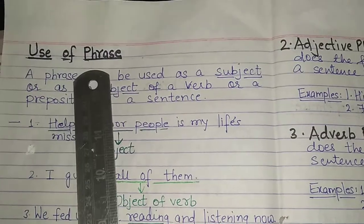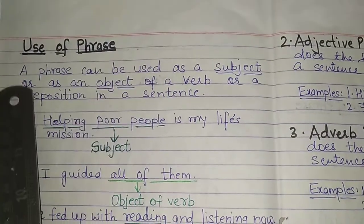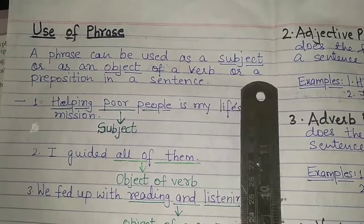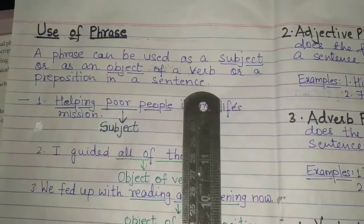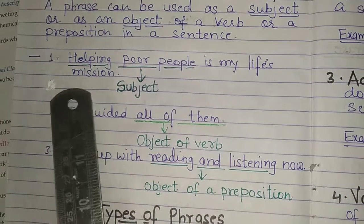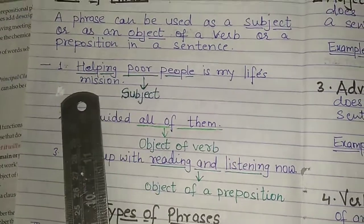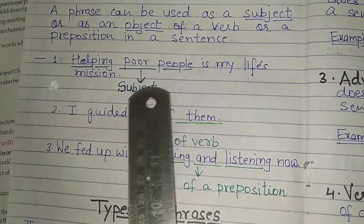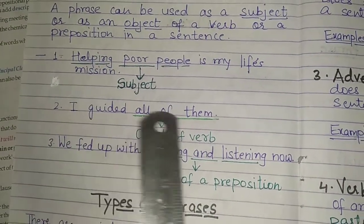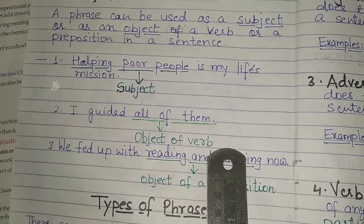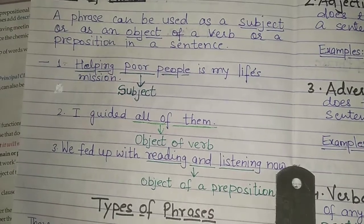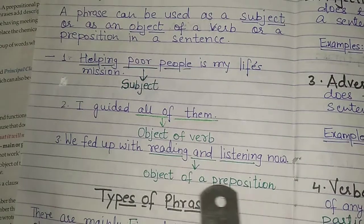Now come to the use of phrase — how to use it. A phrase can be used as a subject, or as an object of a verb, or a preposition in a sentence. For example: 'Helping poor people is my life's mission' — here 'helping poor people' is the subject, so it is used as a subject. 'I guided all of them' — 'all of them' is the object of the verb. 'We fed up with reading and listening' — 'reading and listening' is the object of a preposition.